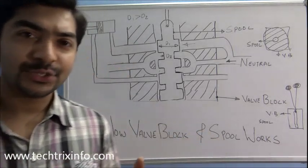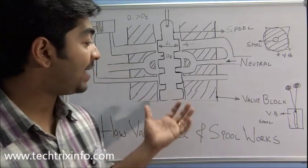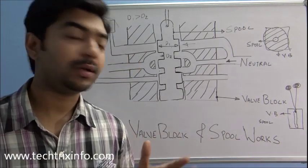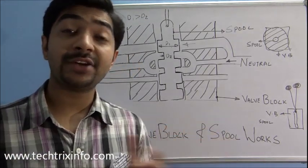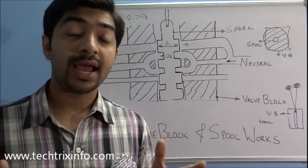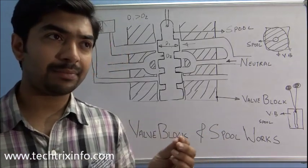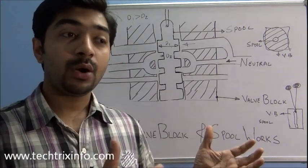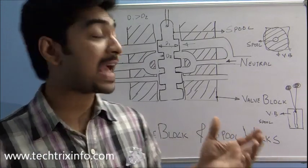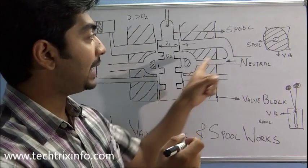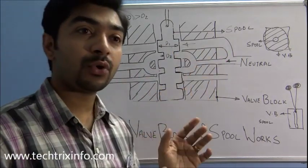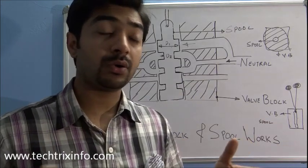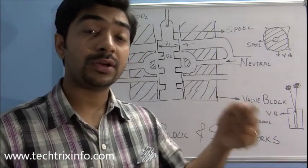Good morning and welcome back. Today let's learn how a valve block and its spool actually works. A valve block is used in hydraulic circuits, in hydraulic machineries. For example, backhoe loader machines, track-type excavator machines like JCB, Caterpillar, or L&T machines have a valve block. This helps to channel the hydraulic flow towards each hydraulic ram for each service or work to happen.